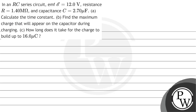Let's read this question. In our RC circuit, EMF is 12 volts, resistance R equals 1.4 mega ohm, and capacitance C equals 2.7 micro farad. Part A: calculate the time constant. Part B: find the maximum charge that will appear on the capacitor during charging. And Part C: how long does it take for the charge to build up to 16 micro coulombs?